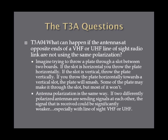What can happen if the antennas at opposite ends of a VHF or UHF line-of-sight radio link are not using the same polarization? Think of throwing a plate through a slot between two boards. If the slot is horizontal, throw the plate horizontally; if vertical, throw it vertically. Throwing a plate horizontally at a vertical slot means it crashes — most won't get through. Similarly, if two differently polarized antennas send signals at each other, the received signal could be significantly weaker.